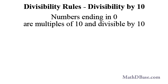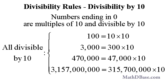Any whole number that ends in 0 is divisible by 10. No matter how many zeros a number has at the end, it is a multiple of 10, and so divisible by 10. If it has two zeros at the end, it is a multiple of 100, and therefore divisible by 10. If a number has six zeros at the end, it is a multiple of 1,000,000, also a multiple of 10, and therefore divisible by 10.